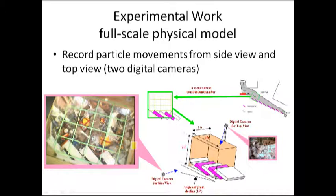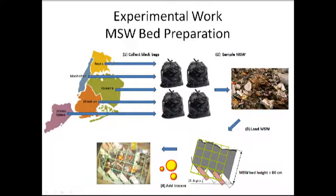This is the full scale physical model. Physical scale model has four grate and two of them is the moving bar. We prepared MSW bed, collecting black bags from New York City and sampling MSW from black bags and loaded MSW to the physical model and added tracers.